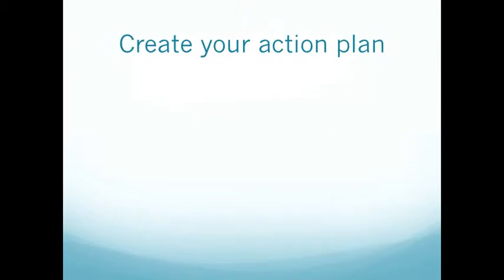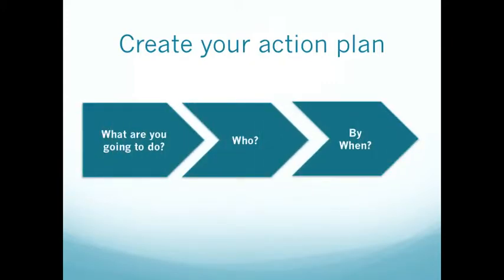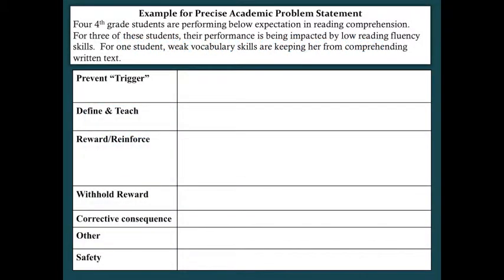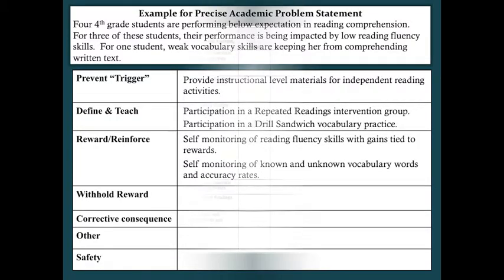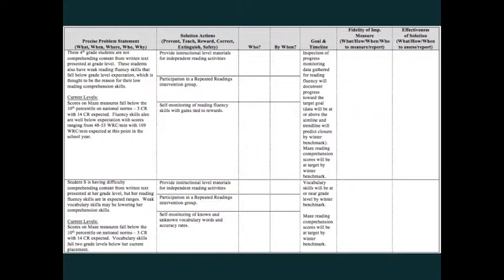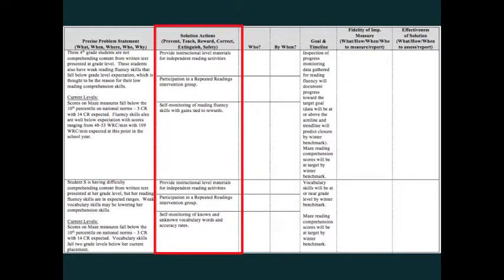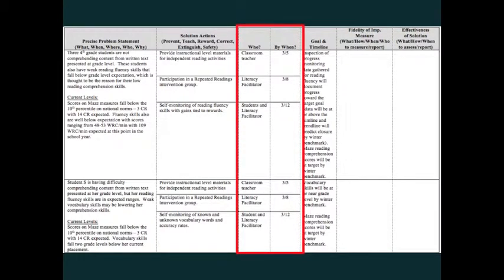Now consider those problems — what would your action plan be? Remember that when putting an action plan together, we first have to identify what the solution will be, then say who is going to do it and by when it will be put in place. Here are some possible solutions we could put in place for our example. Once we've identified what we want to put in place, we enter it into our TIPS meeting minutes form, then identify who will implement it and by what timeline we'd expect it to be in place.